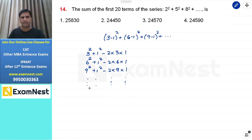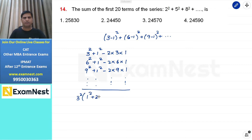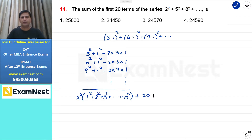अगर हम इन सब को add कर दें, तो सभी में हम 3 square यानि 9 common ले सकते हैं, तो अंदर बचेगा 1 square plus 2 square plus 3 square up to 20 square। Plus 1 square 20 times आ रहा है तो यह value होगी 20। Minus — यहाँ पर 2 into 3 यानि 6 common लें तो अंदर बचेगा 1 plus 2 plus 3 and so on up to 20 terms।